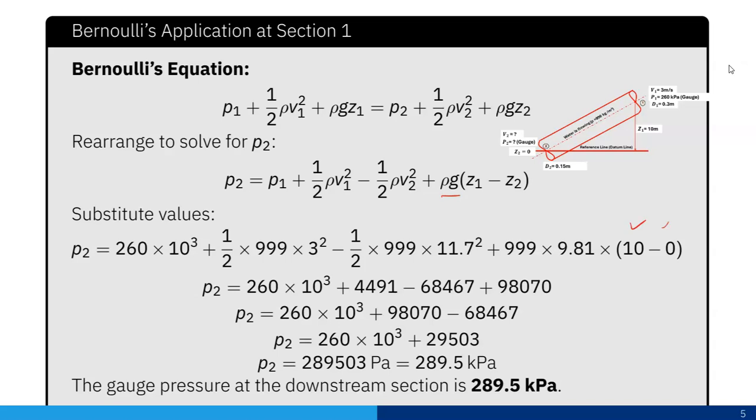Finally I will get p2 equals 289,503 pascal, or 289.5 kilopascal. The gauge pressure at the downstream section is 289.5 kilopascal. That's it, thank you.